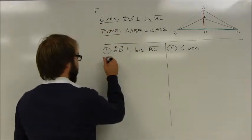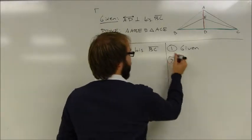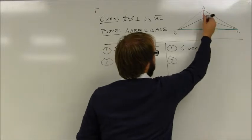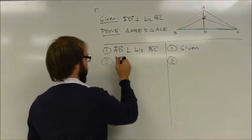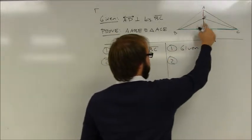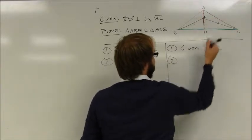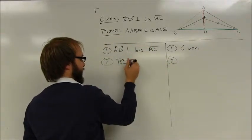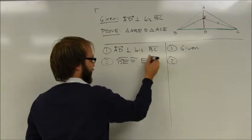More importantly, I know that point E, also on that perpendicular bisector, is equidistant from the endpoints of BC. That's the same thing as saying that BE is congruent to EC.